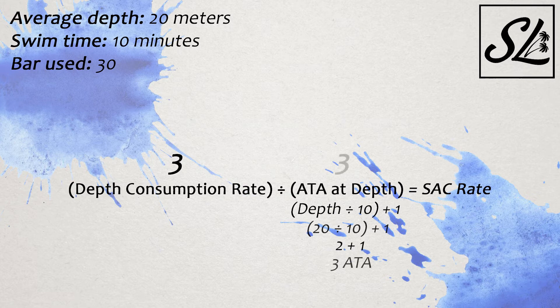So let's start working this information into an equation. In order to calculate our SAC rate, we will first need to determine our gas consumption rate at depth. This can be found by taking our total bar used and dividing by our swim time of 10 minutes. We will then divide this by the atmospheric pressure at our given depth of 20 meters. To find this, we will divide 20 by 10 and add 1 to get an answer of 3 atmospheres. This leaves us with 1 bar per minute as our SAC rate, meaning that at the surface, we would consume 1 bar of air every 1 minute.